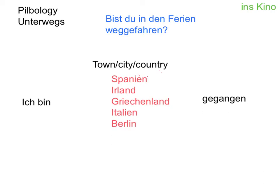The gegangen can technically be the same, but there's one word we need to add in order to say 'to'. At the moment we're saying ich bin Spanien gegangen, which doesn't really make sense. If you are talking about a town, a city, or a country, you must be sure to use nach. Yes, in some cases it means 'after', but here we're talking about going to somewhere — it's just an idiomatic turn of phrase. So: ich bin nach Spanien gegangen.